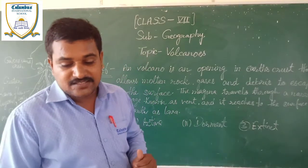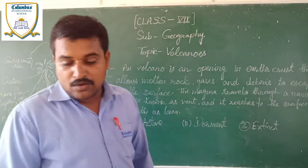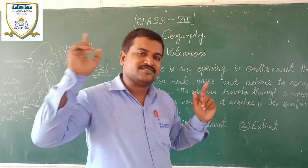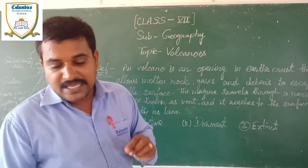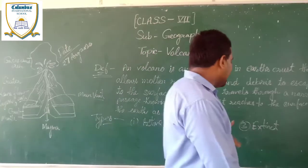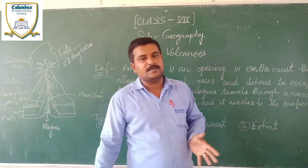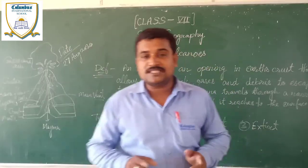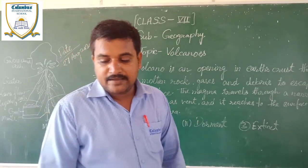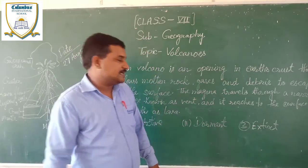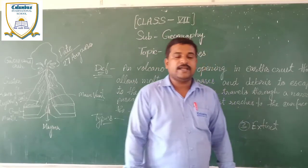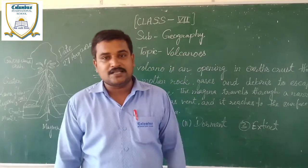The third type is the extinct volcano. An extinct volcano had erupted in earlier times, but now there is no possibility of eruption. It happened in the past, but there is no possibility that it will happen again in the future. This is known as an extinct volcano. Mount Kilimanjaro is an example of an extinct volcano. I hope you are getting all the points related to volcanoes.